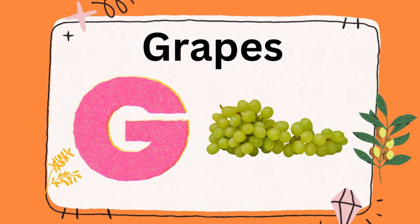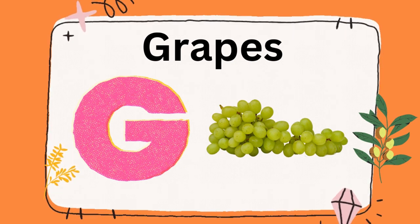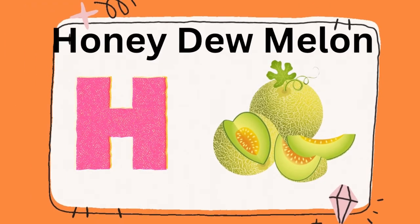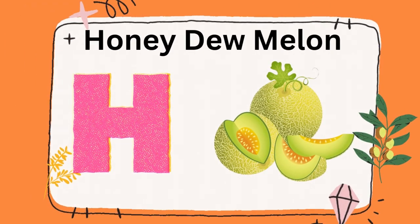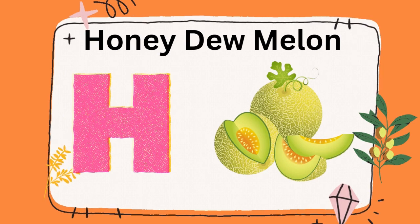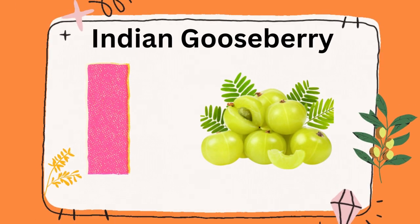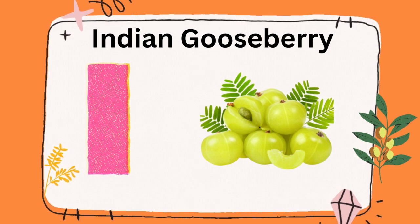G is for grapes, G is for grape. H is for honeydew melon, H is for honeydew melon. I is for Indian gooseberry, Indian gooseberry.